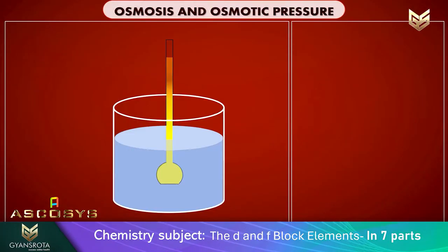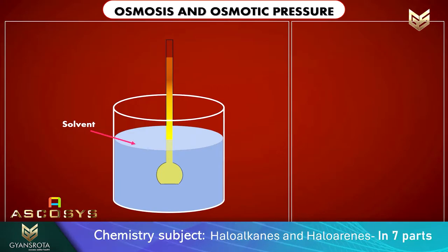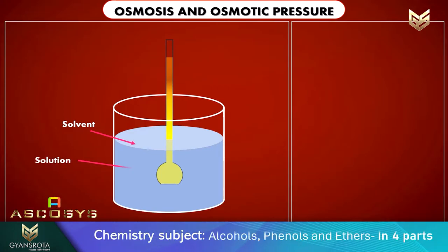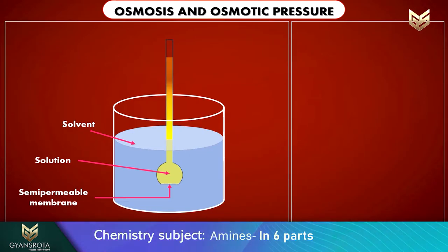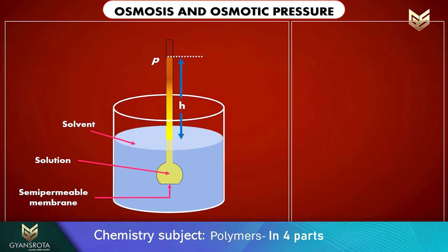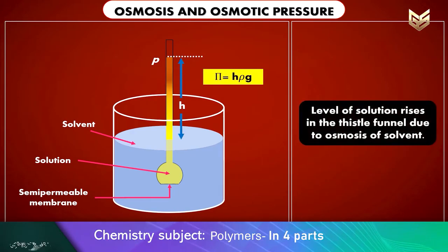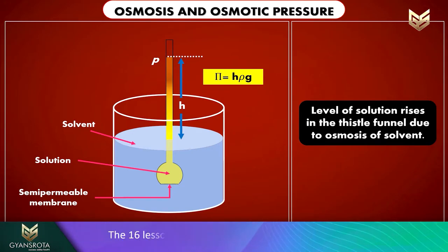You can see on the screen there is a beaker in which a solvent is added, and in a funnel there is a solution. The funnel has a semi-permeable membrane at its boundary. The solvent molecules from the surrounding enter into the solution and the level of the solution rises in the funnel. This process of movement of solvent particles through a semi-permeable membrane into the solution is known as osmosis.